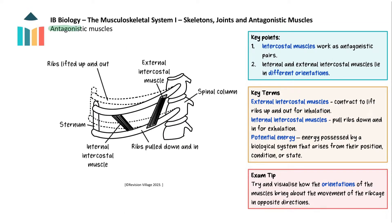With the antagonistic external and internal intercostal muscles, they have different orientations of the muscle layers. You can see in this diagram how they lie in different directions. When the external intercostal muscles contract they lift the rib cage up and out for inhalation. This lifting of the ribs stretches the internal intercostal muscles, storing potential energy in an immense protein called titin found in muscle cells, which acts like a spring.